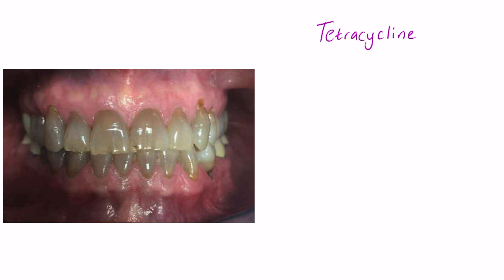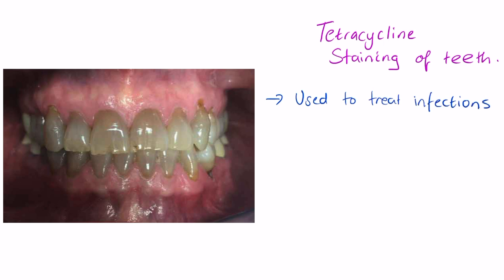Today's video is about tetracycline staining. Tetracycline is a specific antibiotic which causes staining in teeth, and it's particularly important for children and pregnant patients to avoid very high doses or prolonged doses of tetracycline because of this risk of stained teeth.